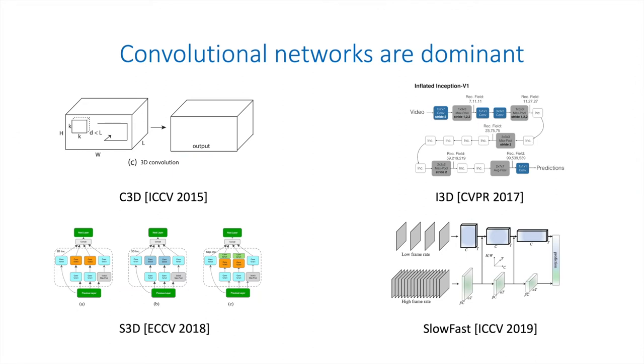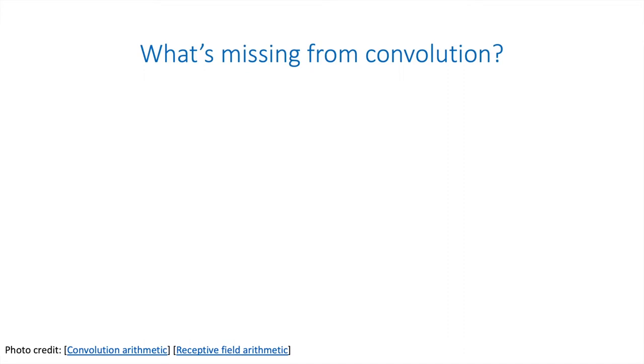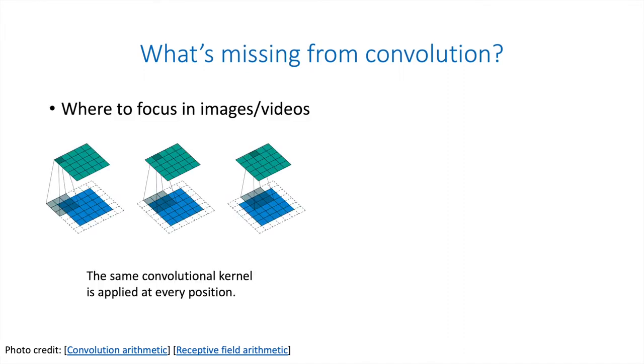Convolution networks are dominant in computer vision. For example, most video classification methods use convolution as the primary building block to construct their network. However, convolution still has its limitations. First, convolution does not explicitly model where to focus in the data, since the same convolution kernel is applied at every position.